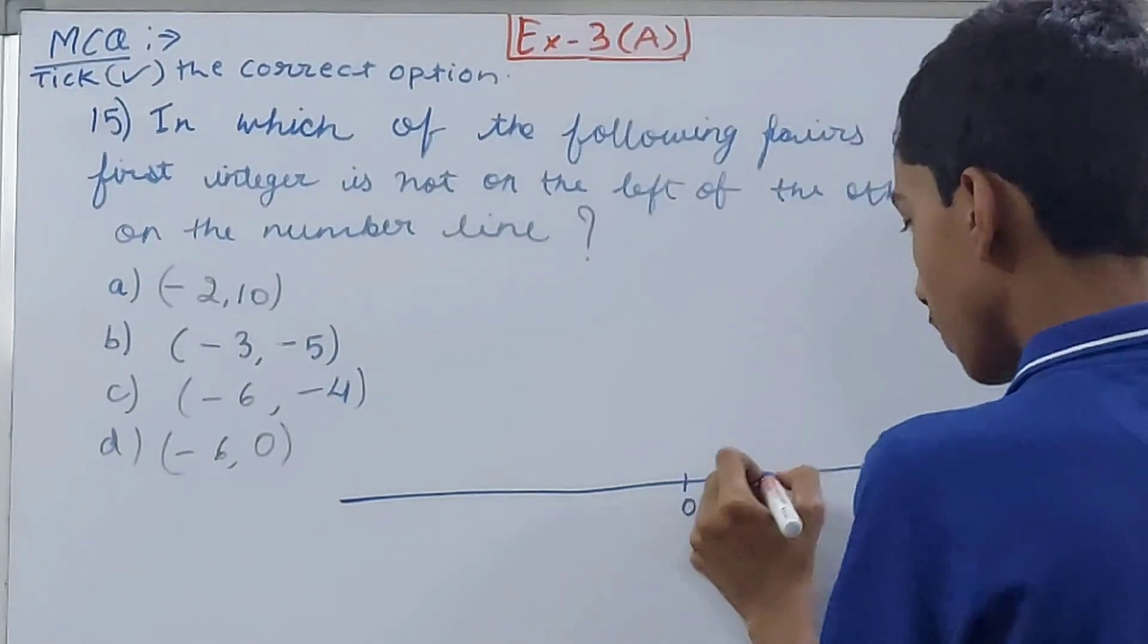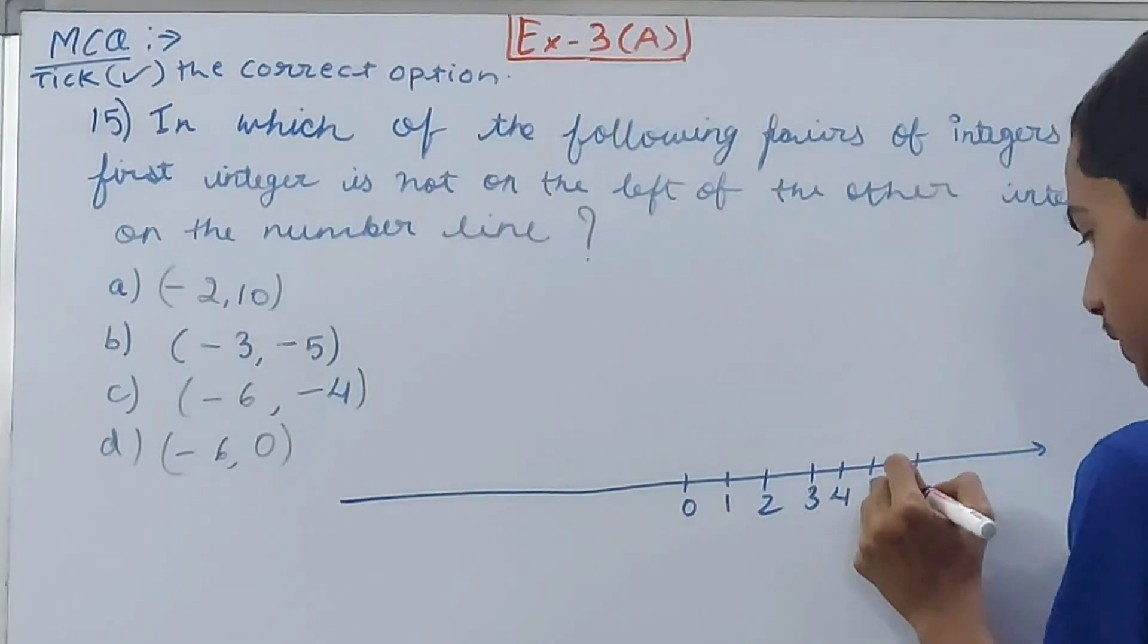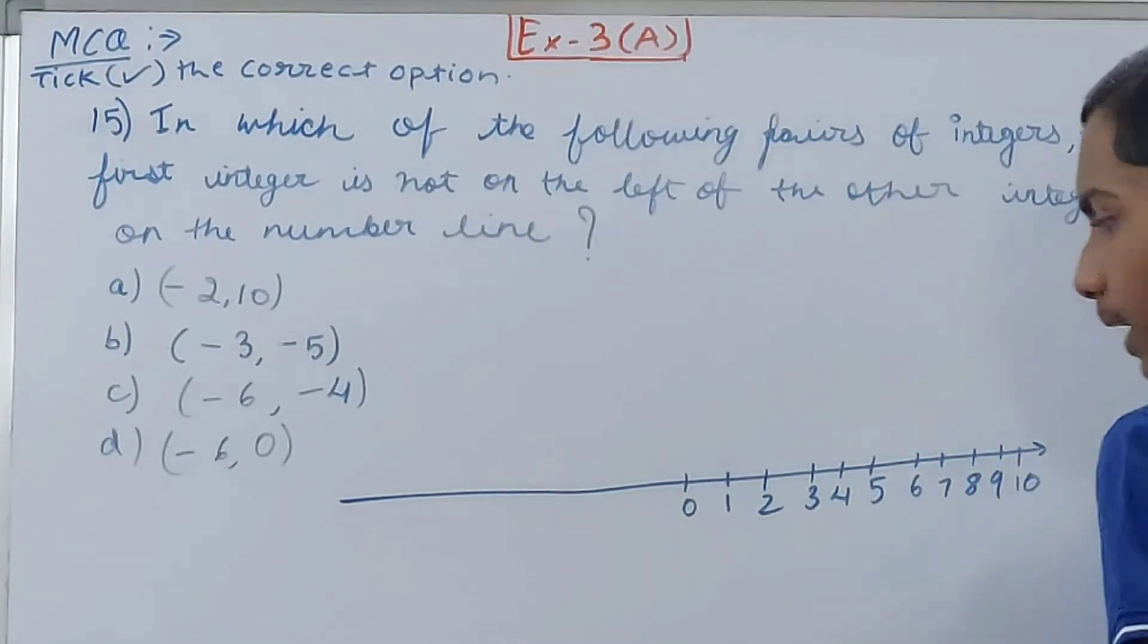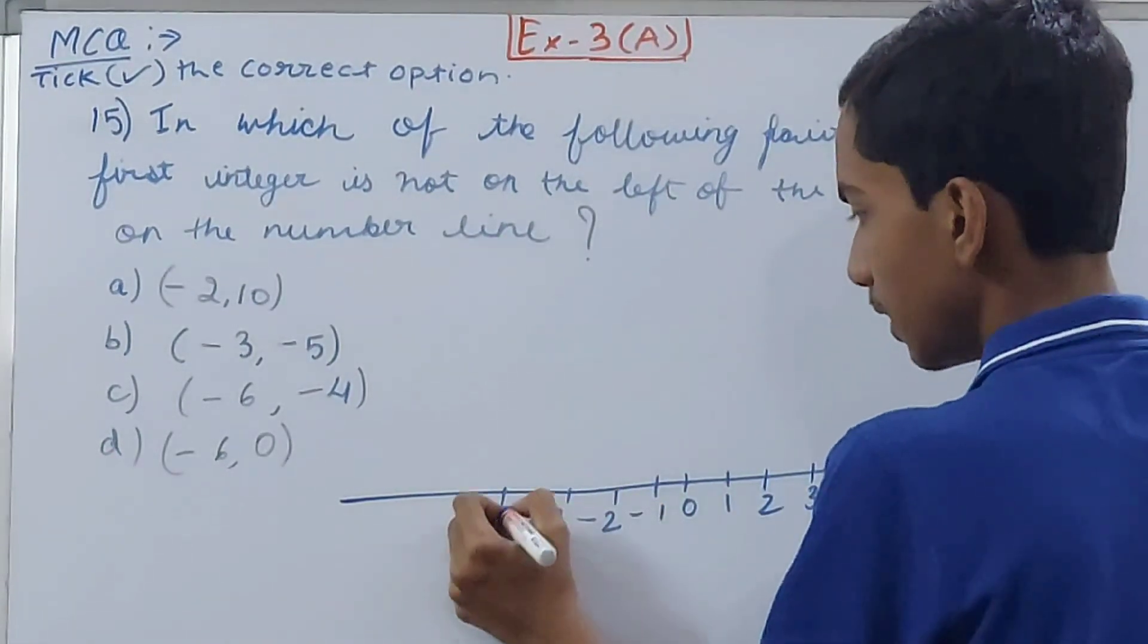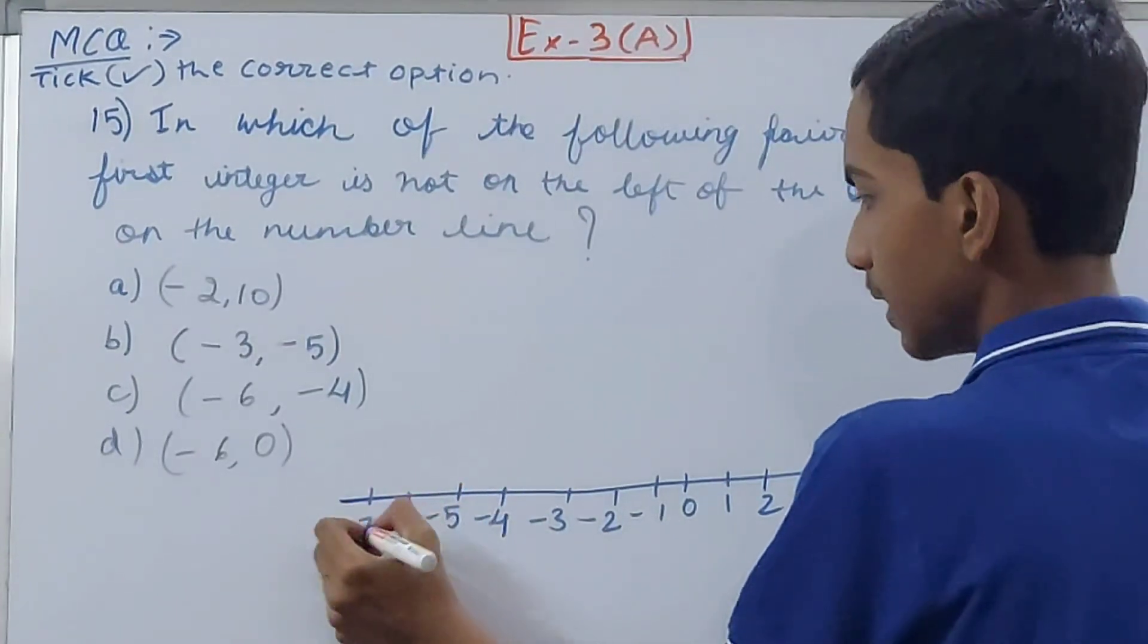0, 1, 2, 3, 4, 5, 6, 7, 8, 9, and 10. And here I'll make the negative ones: -1, -2, -3, -4, -5, -6, -7, -8, -9, -10.